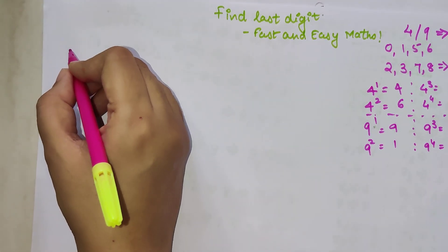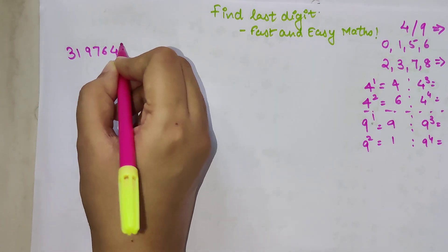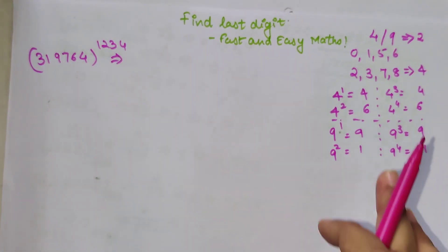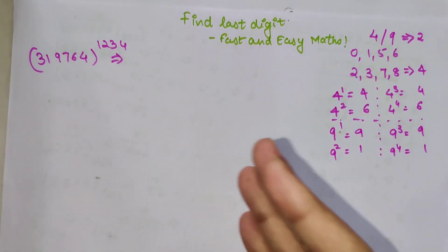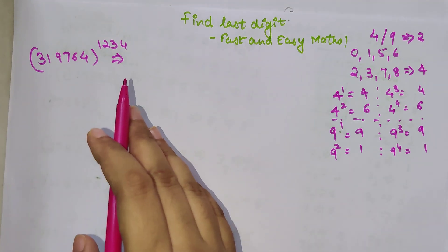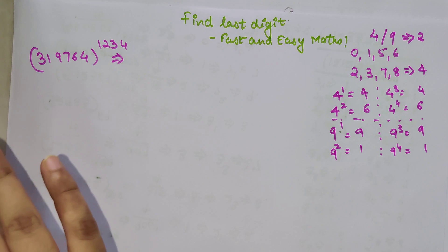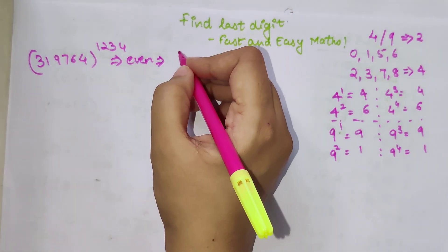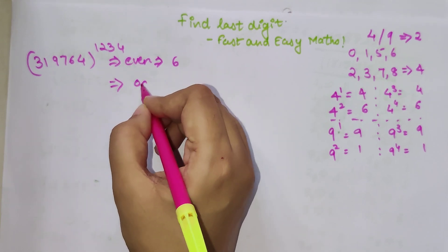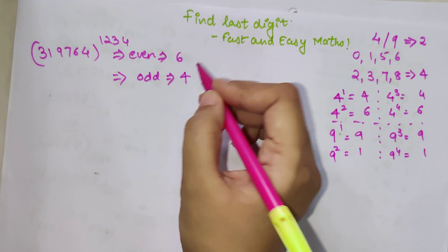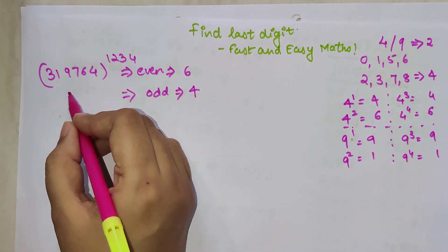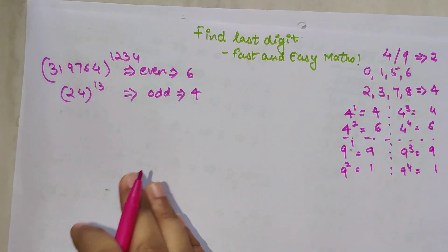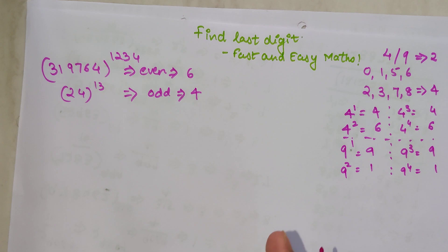Now let's understand what the last digit is when I have a number like 319764 raised to 1234. Here, since the power cycle is two, you just need to look at the index. If the index is even, the last digit is 6. If the index is odd, the last digit is 4. For example, 224 raised to 13 — since 13 is odd, the last digit will be 4. Very simple!